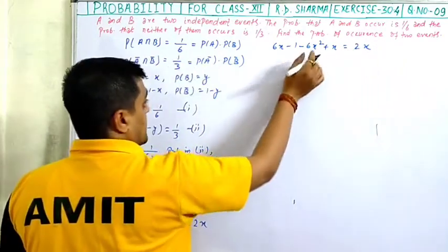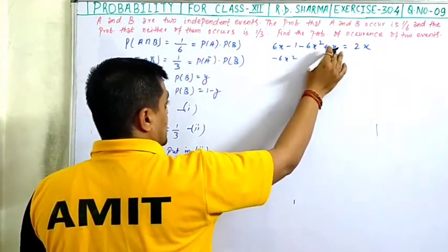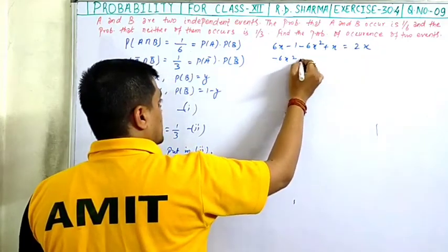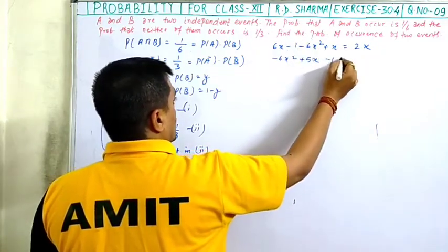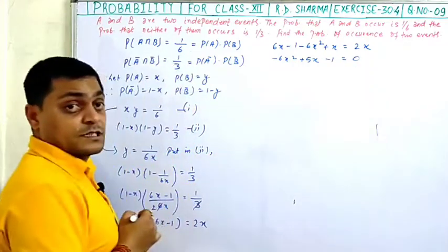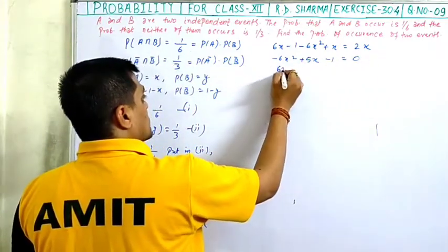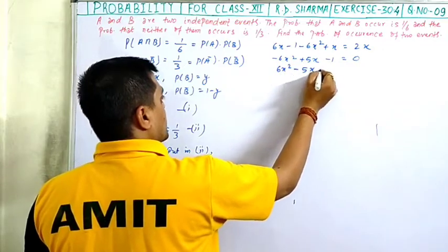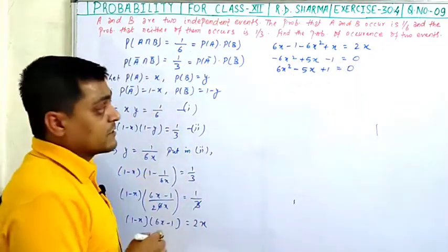Simplifying: minus 6x squared plus 6x plus x minus 2x minus 1 equals 0, giving minus 6x squared plus 5x minus 1 equals 0. Multiplying through by minus 1: 6x squared minus 5x plus 1 equals 0.